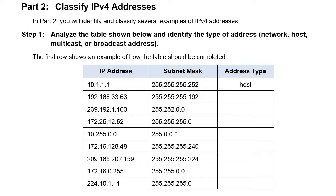Those types are network, host, multicast, and broadcast. The interesting part of this lab is that Cisco throws in a type of address we have not yet discussed in the labs thus far, which is the multicast address.